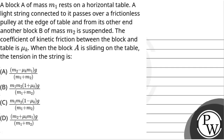Hello. Let's read the question. The question says that a block A of mass M1 rests on a horizontal table. A light string connected to it passes over a frictionless pulley at the edge of the table, and from its other end another block B of mass M2 is suspended. The coefficient of kinetic friction between the block and the table is mu k. When block A is sliding on the table, the tension in the string is?